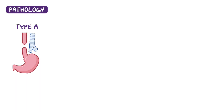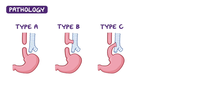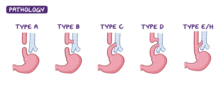Based on the location and extent of the defect, these two conditions are classified into five types. Type A is called isolated esophageal atresia and happens when the middle part of the esophagus is missing. In type B, the proximal esophagus communicates with the trachea. In type C, which is the most common type, there's proximal esophagus atresia, but the distal esophagus has a communication with the trachea. In type D, the middle part of the esophagus is missing, but both the proximal and distal parts communicate with the trachea. Finally, with type E, also referred to as type H, there's a tracheoesophageal fistula but no esophageal atresia.